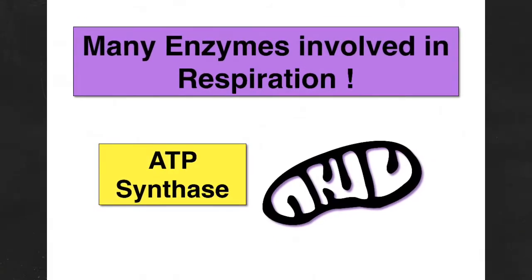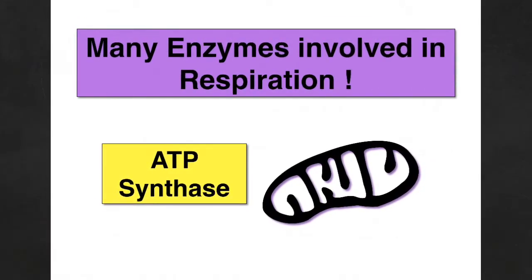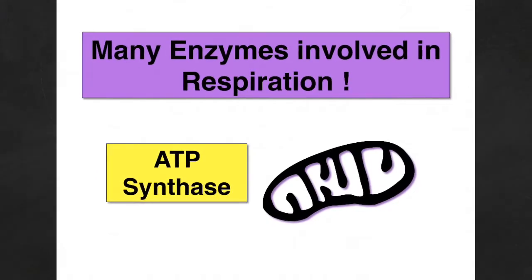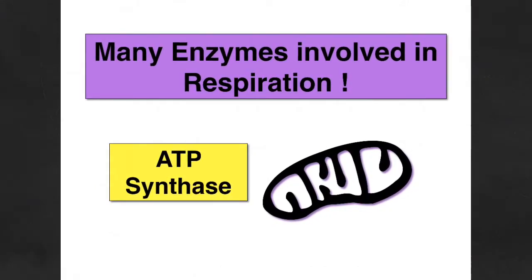Those ribosomes must be present in order to produce proteins, particular types of proteins such as enzymes. And one important enzyme is ATP synthase.